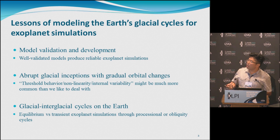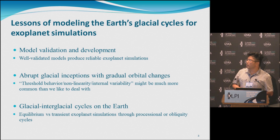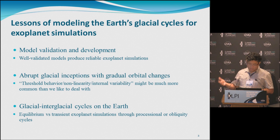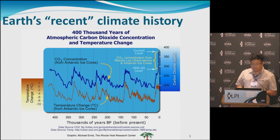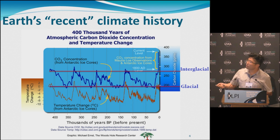There are abrupt glacial inceptions with very tiny gradual orbital changes. That basically means threshold behavior, non-linearity, and internal variability might be much more common than we want to deal with. We know there are interglacial cycles on Earth, so in addition to equilibrium simulation, we probably need to run some trending exoplanet simulations with time-varying forcing. Right now we are at an interglacial, so it's even more habitable than if we were in a glacial.